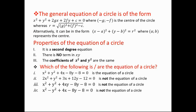The third property is that the coefficient — the number in front of x squared and y squared — must be the same at all times. If we have 2x squared, we must also have 2y squared. Whatever the coefficient of x squared, it must equal that of y squared. These are the three properties. Now let's look at four equations and determine whether they are equations of a circle.